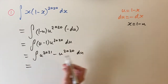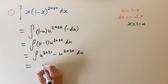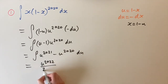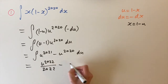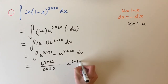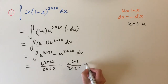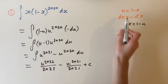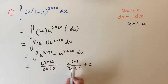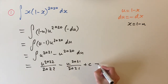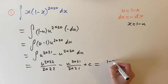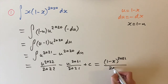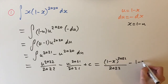This is something we can integrate — it's very simple. We just raise the power by 1 and divide by the new power. So our answer is u to the power of 22 divided by 22, minus u to the power of 21 divided by 21, plus c. That's the first way to do it.